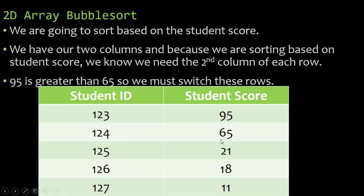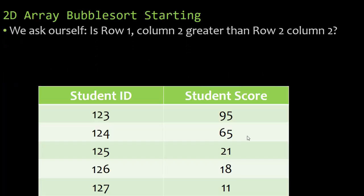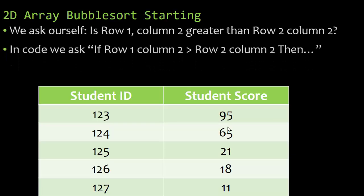So 95 is greater than 65, so I must switch these rows. When you're writing a 2D array bubble sort, sometimes it helps to ask yourself some questions and talk out loud. We ask ourselves: is row 1 column 2 greater than row 2 column 2? Is row 1 column 2 — 95 — greater than 65? In our code we use an if statement: if row 1 column 2 is greater than row 2 column 2, then we implement. And we see that 95 is indeed greater than 65. So we're going to take a look at how a bubble sort actually works with the 2D array, and then we're going to code it.